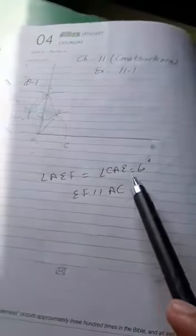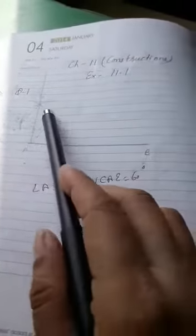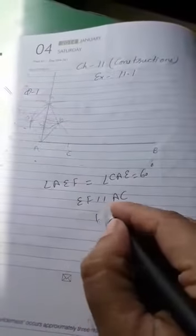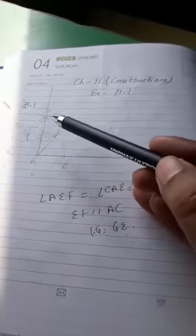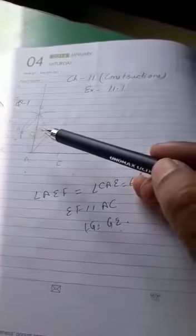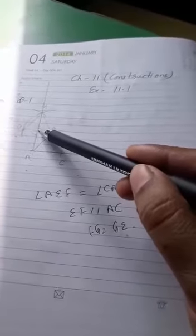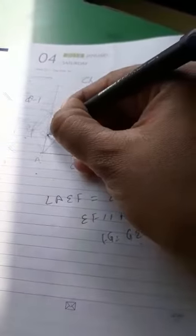Now here as FG is equal to GE, because both are of the same radius, FG is equal to GE, same radius. So this is, wait, let us take one point here. Suppose here I am taking point O.